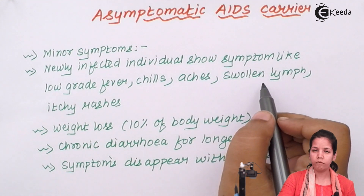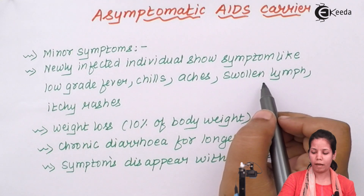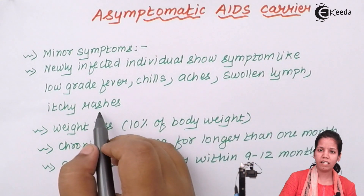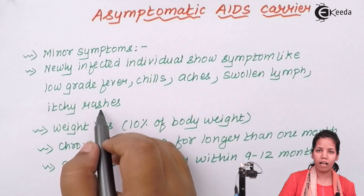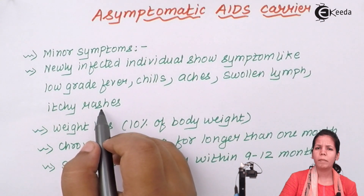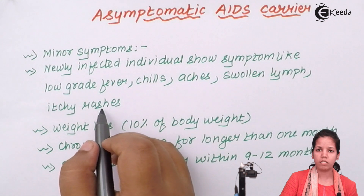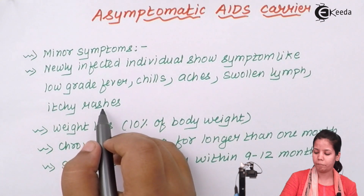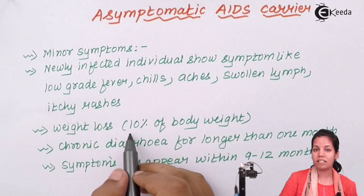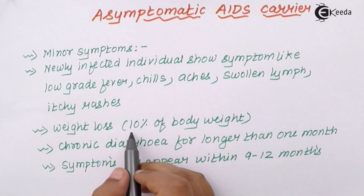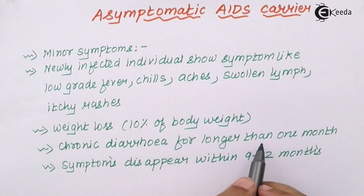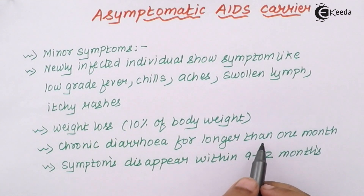Swollen lymph nodes are present, especially in the neck region or lower back of the body. There are itchy red rashes all over the face, thighs, and upper arms — basically on the exposed parts of the body, especially if exposed to dust or polluting agents. Weight loss of about 10% of body weight is seen. Chronic diarrhea can last over a month and cannot be treated with antibiotics or anti-diarrheal medicines.